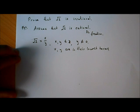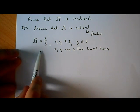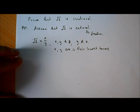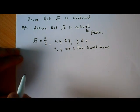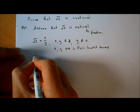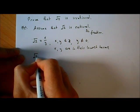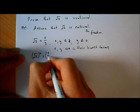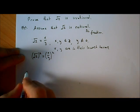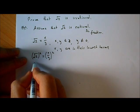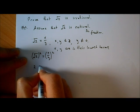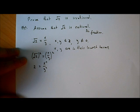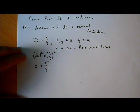Now, to find the contradiction, let's take this equation: the square root of 2 equals x over y. I'll square both sides - the square root of 2 squared equals x over y squared. When we square the square root we get what's in the square root, so we end up with 2 equals x squared over y squared.